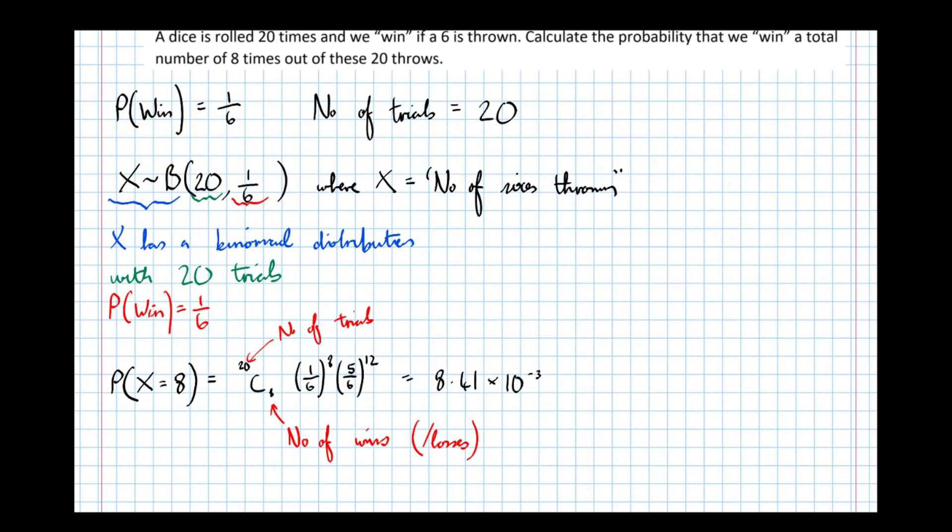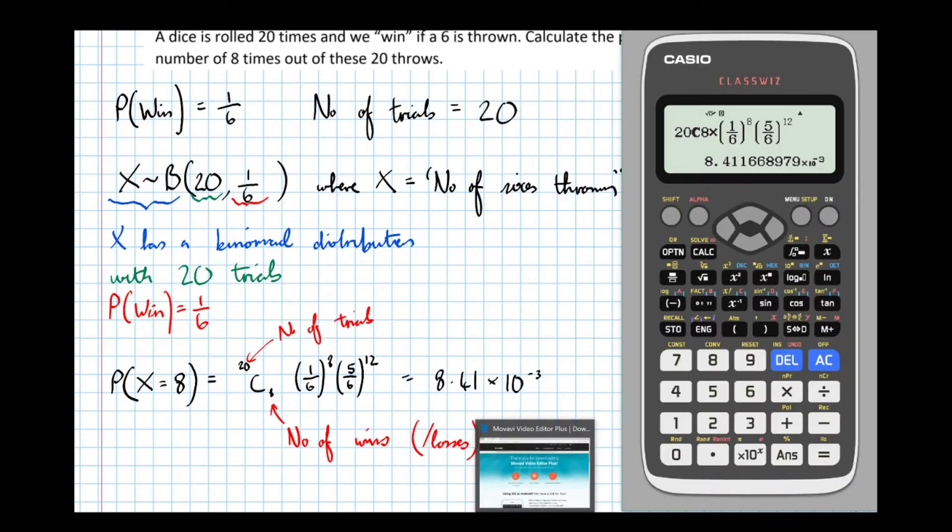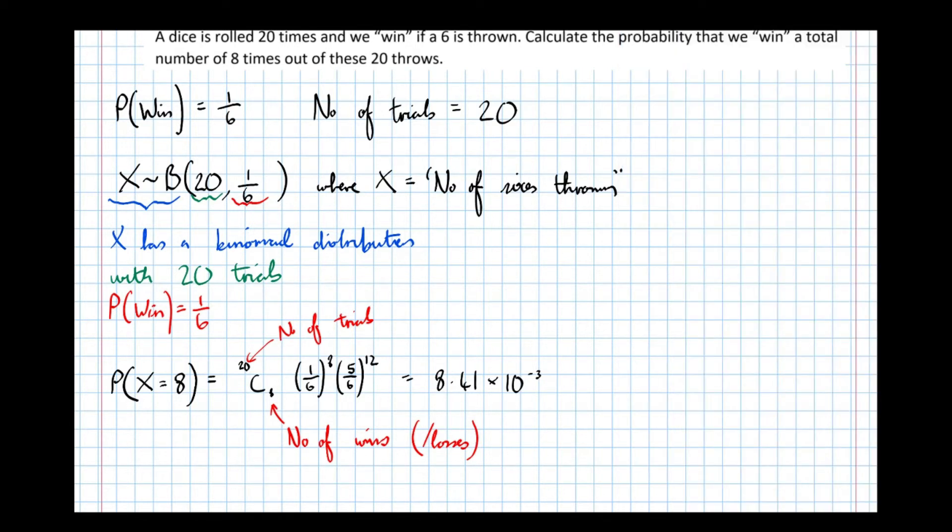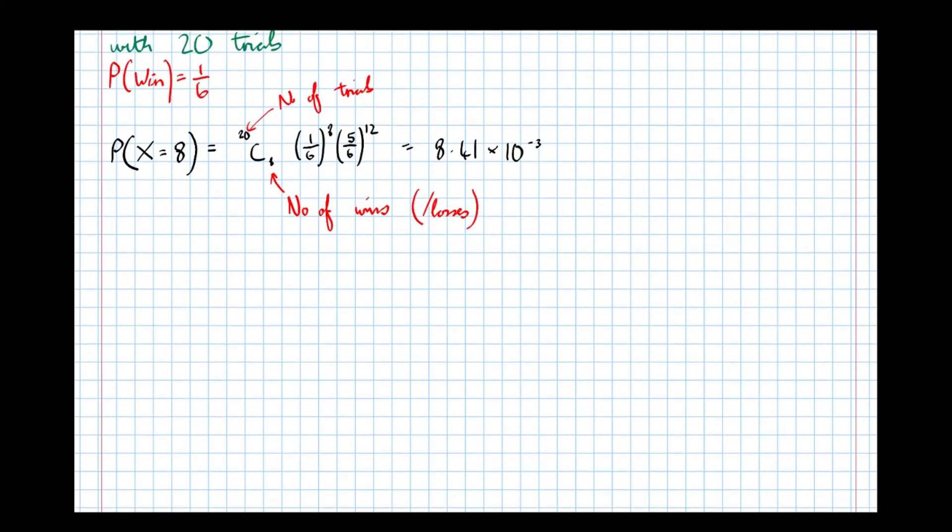If I go back though and change that to 20, C, 12, as I said we could do before, I can see that I get exactly the same answer. So it doesn't matter if you mess up and put the number of losses instead. You'll get exactly the same answer as if you put the number of wins in the combination function.